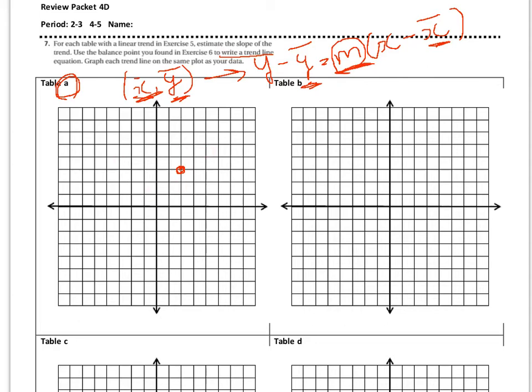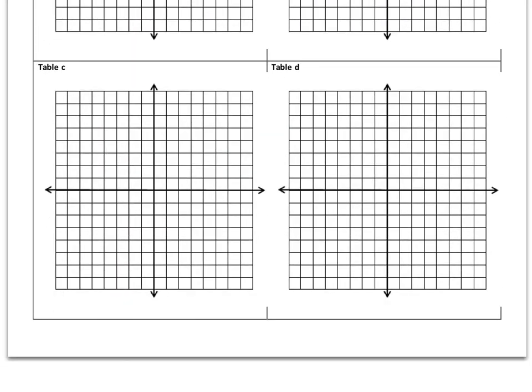Again, you plot all those five points from that, that you get from A. That's the same problem as problem number five. And then you kind of draw a line and estimate it, estimate the slope, and you plug that in here.